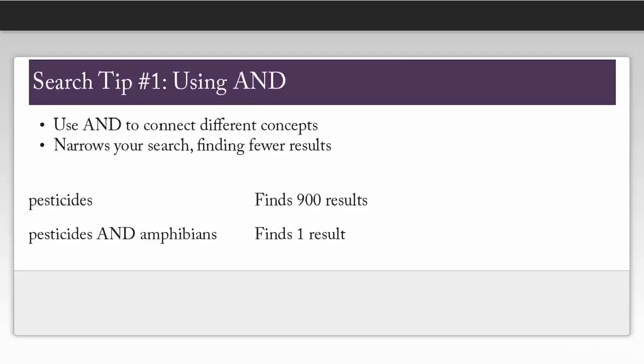The first tip is to use the word AND to combine terms. Using AND will focus your search by telling the database that you want to find only articles that include both terms.